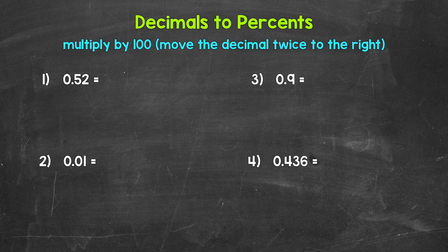Starting with number one, where we have 0.52 — 52 hundredths. When going from a decimal to a percent, all we need to do is multiply by 100. Multiply the decimal by 100, and that will give us the percent. And remember, a quick way to multiply by 100 is to move the decimal twice to the right.